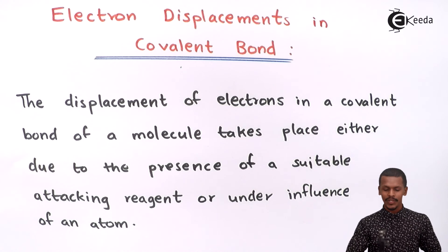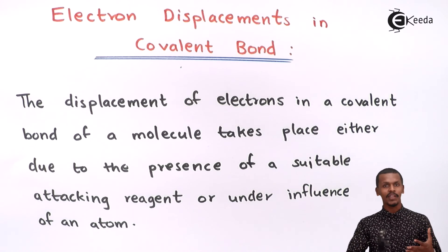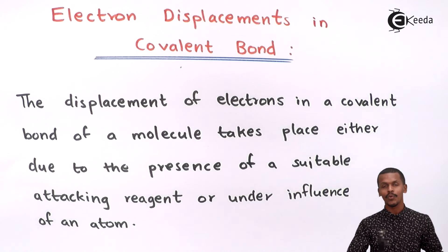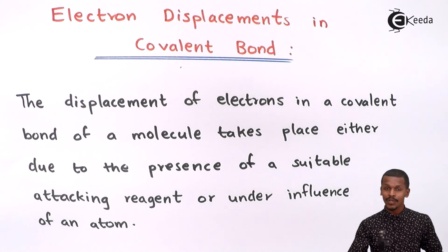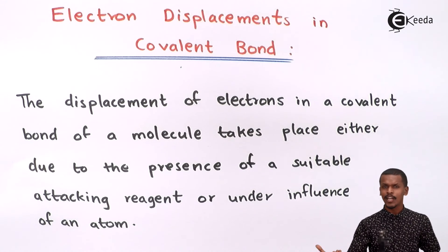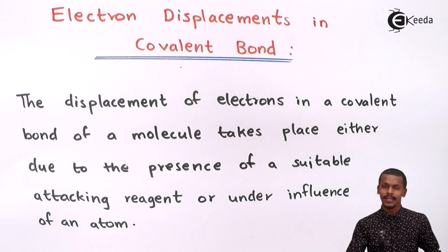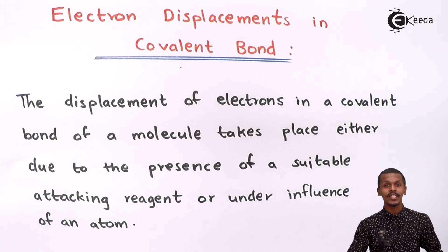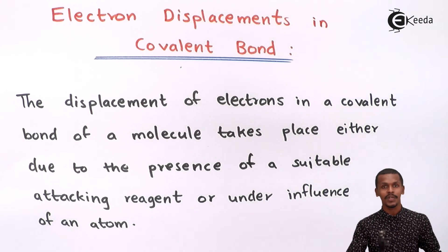Electron displacement plays a very vital role in the inductive effect, resonance, and electromeric effect — and this is what we are going to learn. This was a brief overview of what electron displacement in a covalent bond actually is. Thank you friends for watching this video. I hope you understood it clearly and will share it with your friends. Don't forget to subscribe to the IGRA channel. Thank you so much.